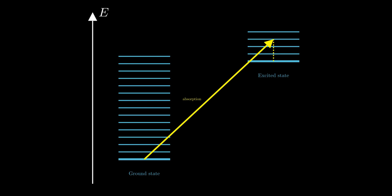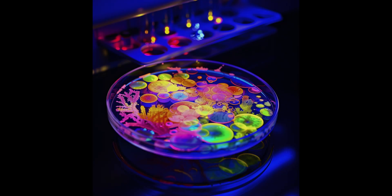Eventually, the molecule returns to its electronic ground state by emitting a photon. The emitted light typically has a longer wavelength because some of the energy is lost to thermal motion. A common example of fluorescence is dyes glowing under UV light.